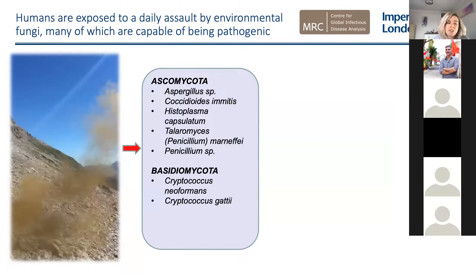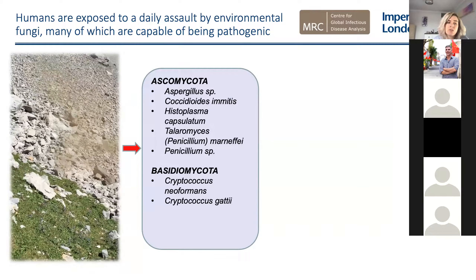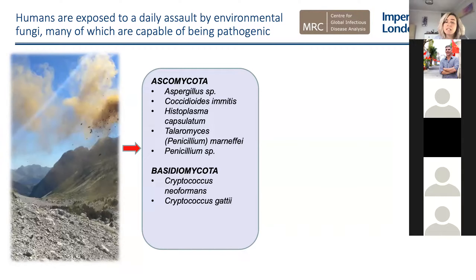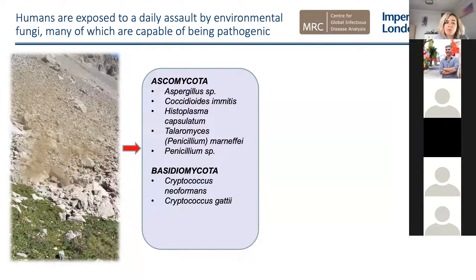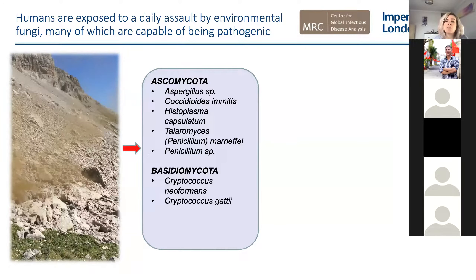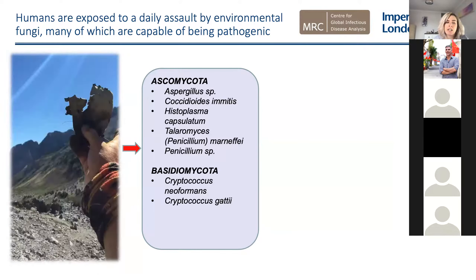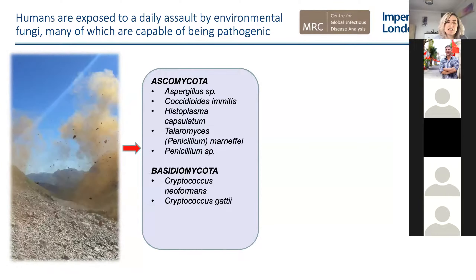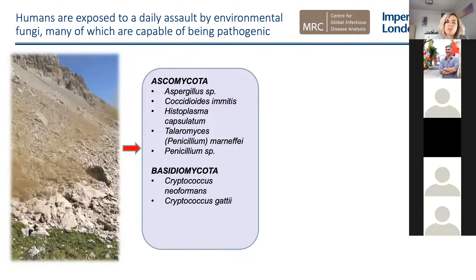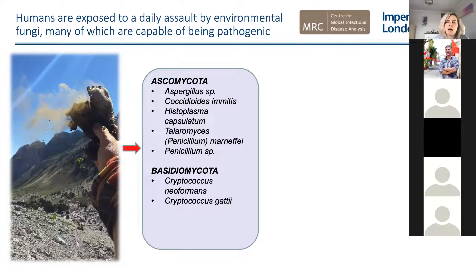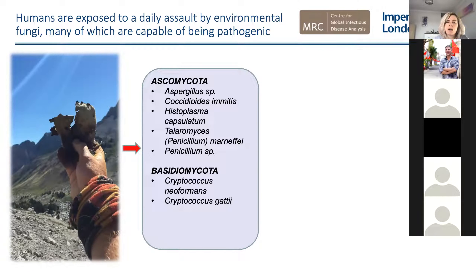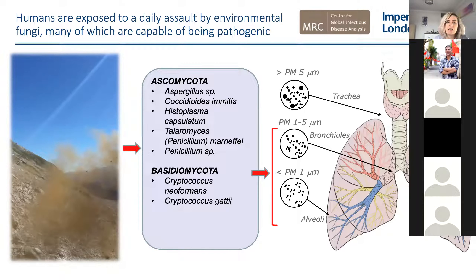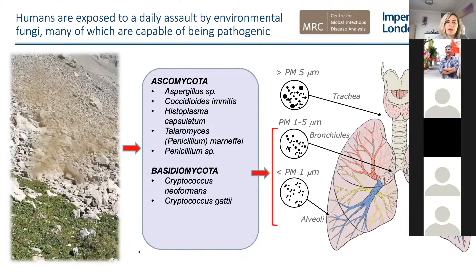Every year Matt goes to the Pyrenees to count the number of amphibians visibly dead from BD and take samples to test which lineage of BD is present. This is a picture of him trekking through the mountains, coming across a fungal sac and noticing how spores are easily dispersed on the air. As humans, we're exposed to environmental fungi every single day, and depending on the size of the spores, they can sit in different parts of the lung.